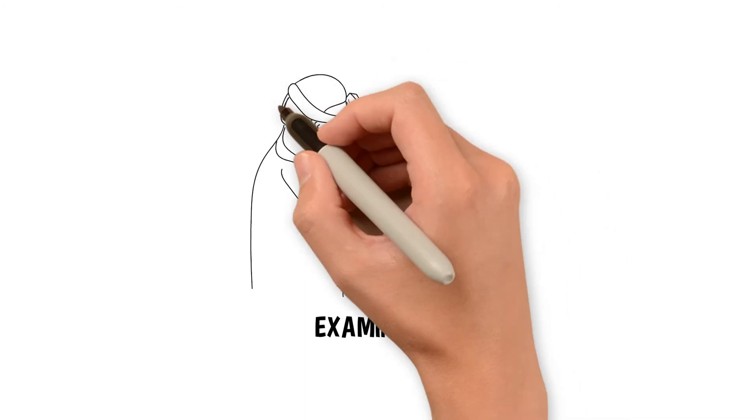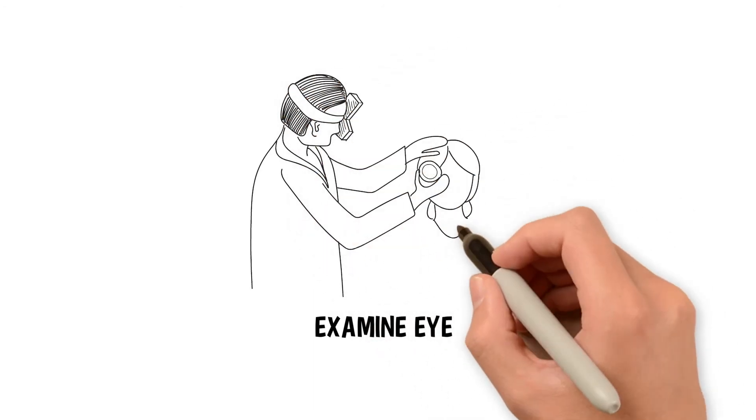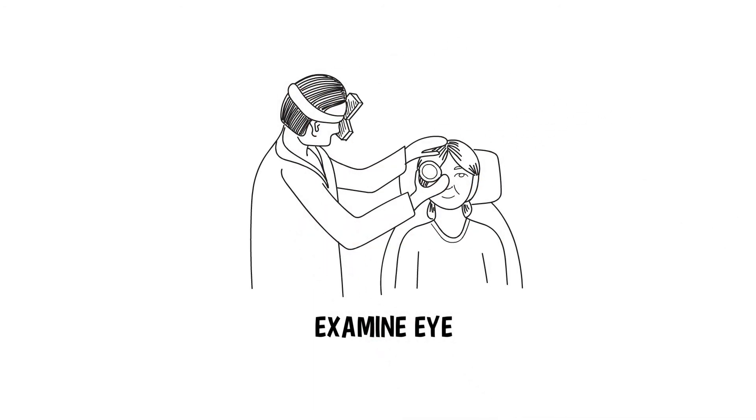Immediately afterwards, your doctor will examine your eye to ensure that the gas bubble is in the right place and to evaluate the pressure in your eye. Sometimes, additional fluid will need to be removed in order to lower the intraocular pressure.